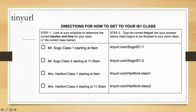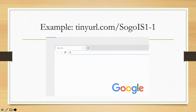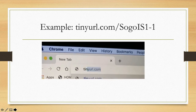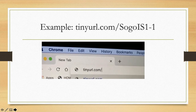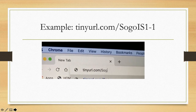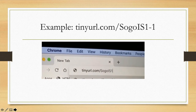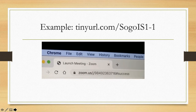Let's say you have Mr. Sogo for class one at 9 a.m. This is the tiny URL you will type into your browser. Simply open a new tab in Google, then proceed to type the tiny URL just as it's shown: tinyurl.com/sogo-is1-1. When you click return or enter, it will take you directly to your Zoom course.